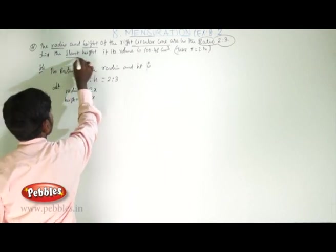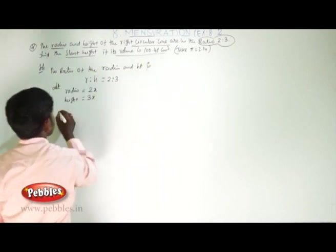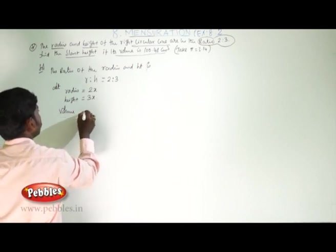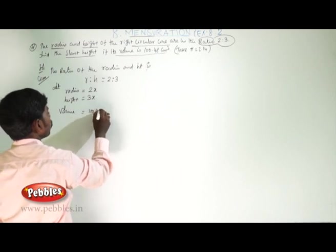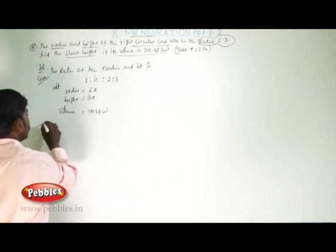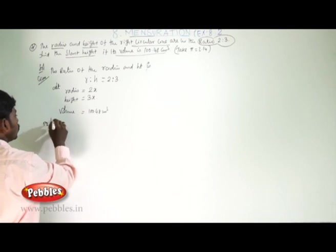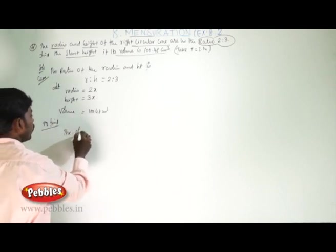Now to find the slant height, the volume is equal to 100.48 centimeter cube.